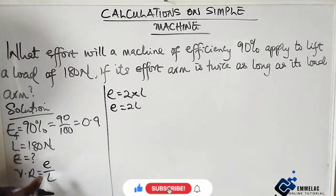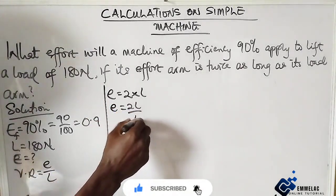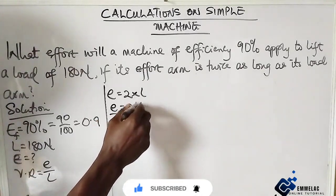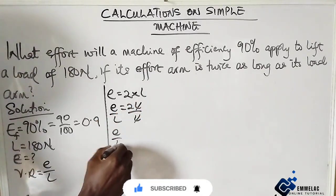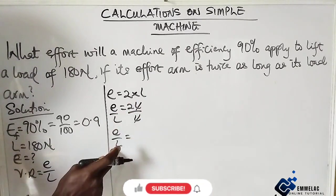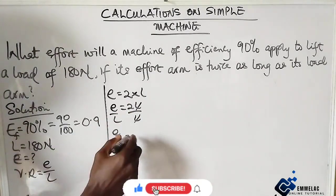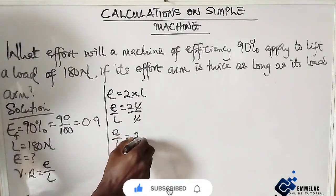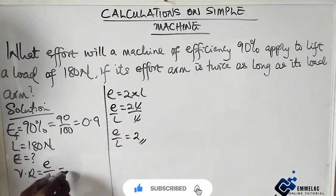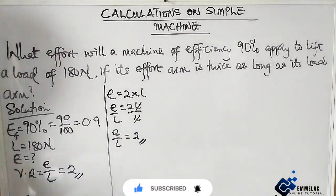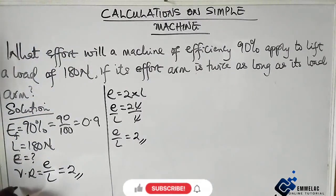Since we have L as the denominator, let's divide through by L. So E over L, which is the effort distance over distance moved by load, the ratio equals 2. So automatically the velocity ratio here equals 2. Now for the mechanical advantage, we don't know.